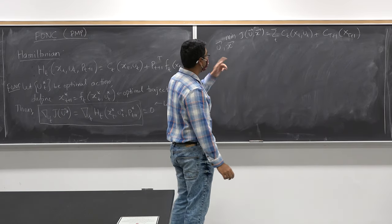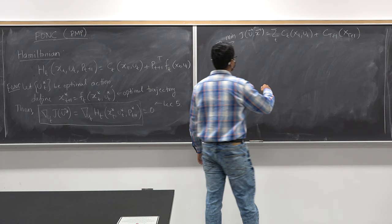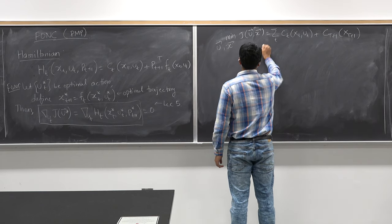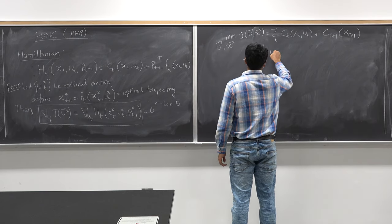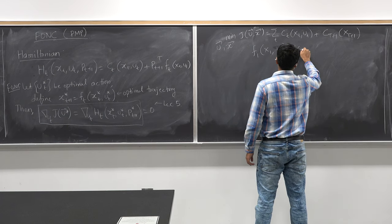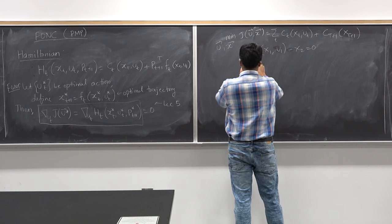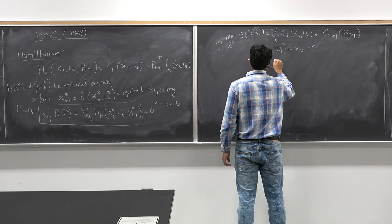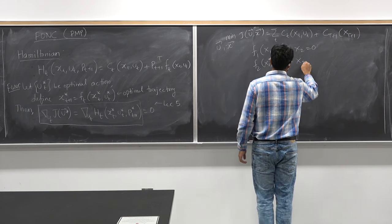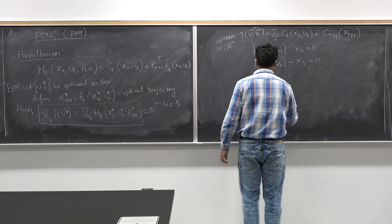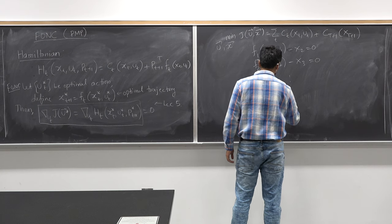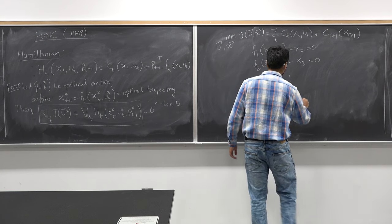I write the constraints as: f_1(x_1, u_1) − x_2 = 0, f_2(x_2, u_2) − x_3 = 0, and so on up to f_t(x_t, u_t) for each time step.